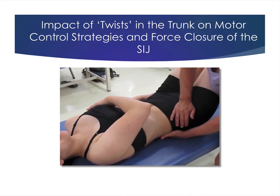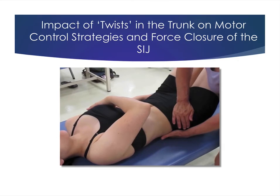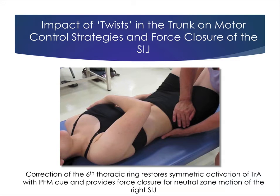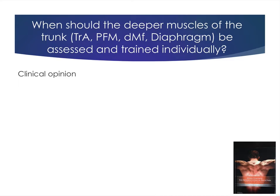So the recruitment strategy for the abdominal wall changes when I change the position of the sixth thoracic ring. And it's not rocket science. The nerves from the low thorax supply the abdominal wall. So it makes sense that you can change neural drive to the abdominal wall by taking twists out of the thorax. Correction of her ring restores symmetric activation with the pelvic floor cue.